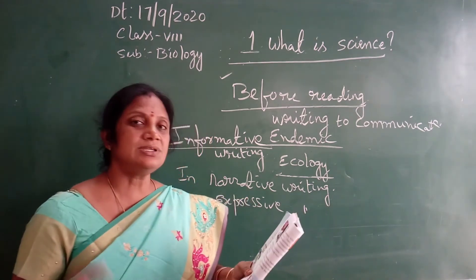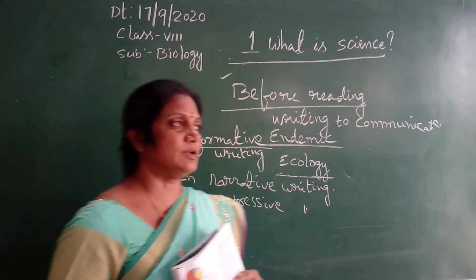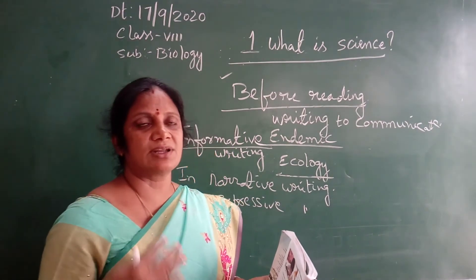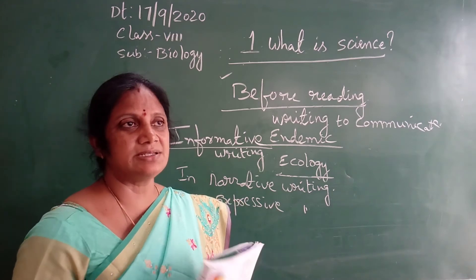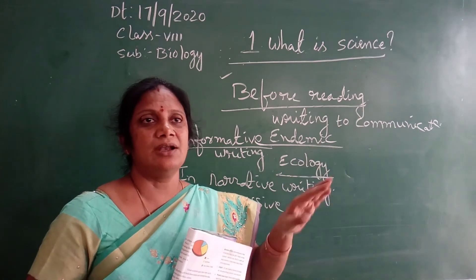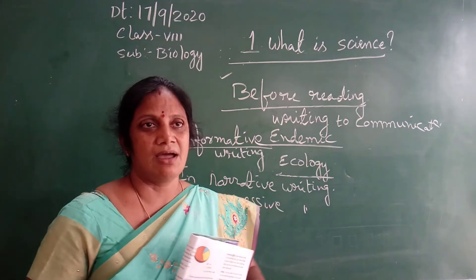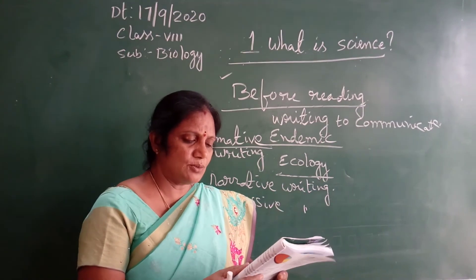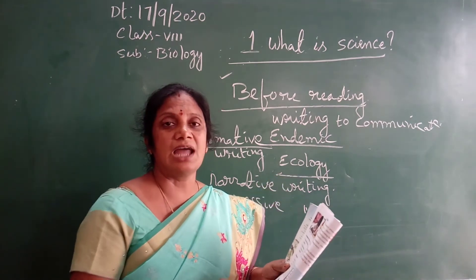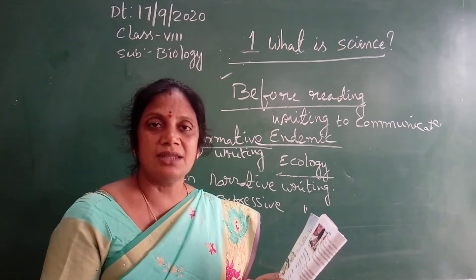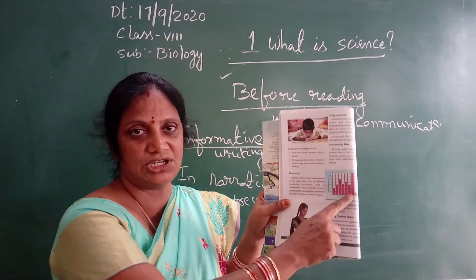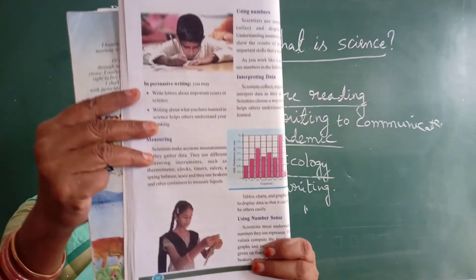Scientists also use numbers — one, two, three, decimals — for conducting experiments and to communicate. They use these numbers to interpret the data. The data is shown with the help of graphs and diagrams. This is the graphical representation.